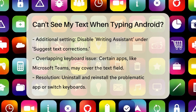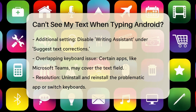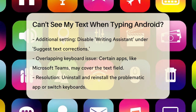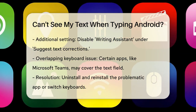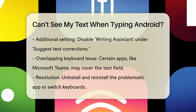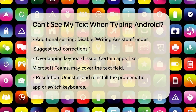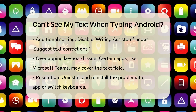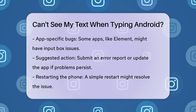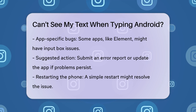Another possible issue could be the keyboard itself overlapping the typing area. This can happen with certain apps, like Microsoft Teams, where the keyboard covers the text field, making it impossible to see what you're typing. To resolve this, try uninstalling and reinstalling the app, or switch to a different keyboard to see if the problem persists.